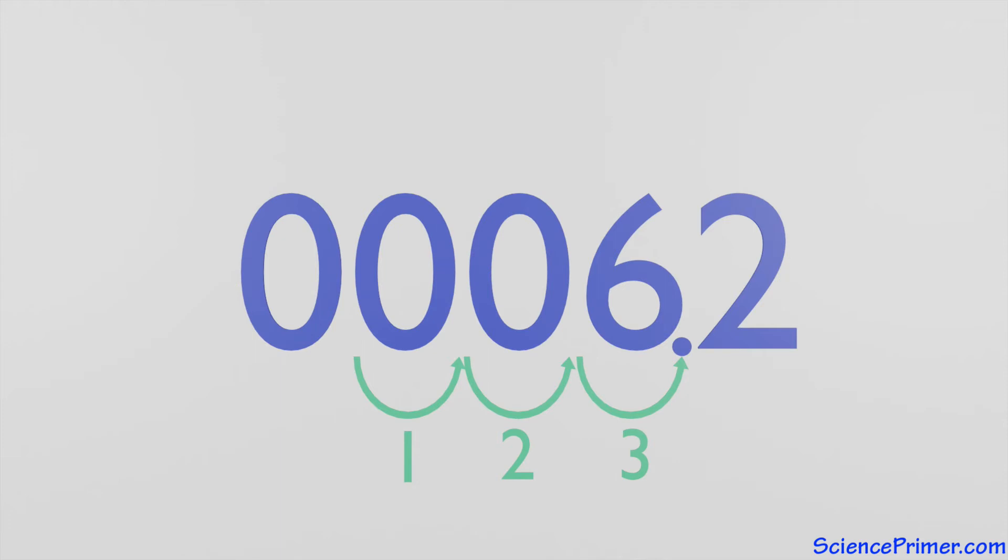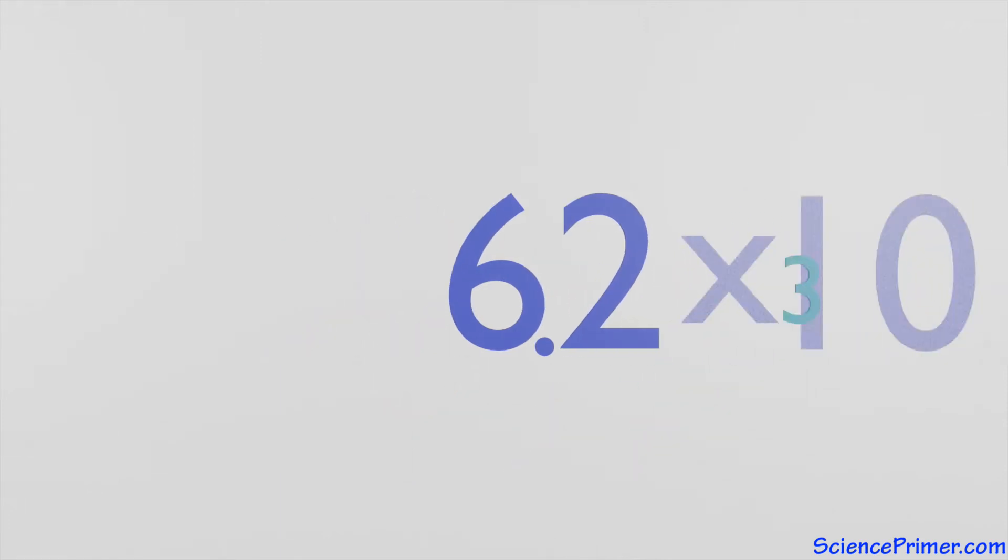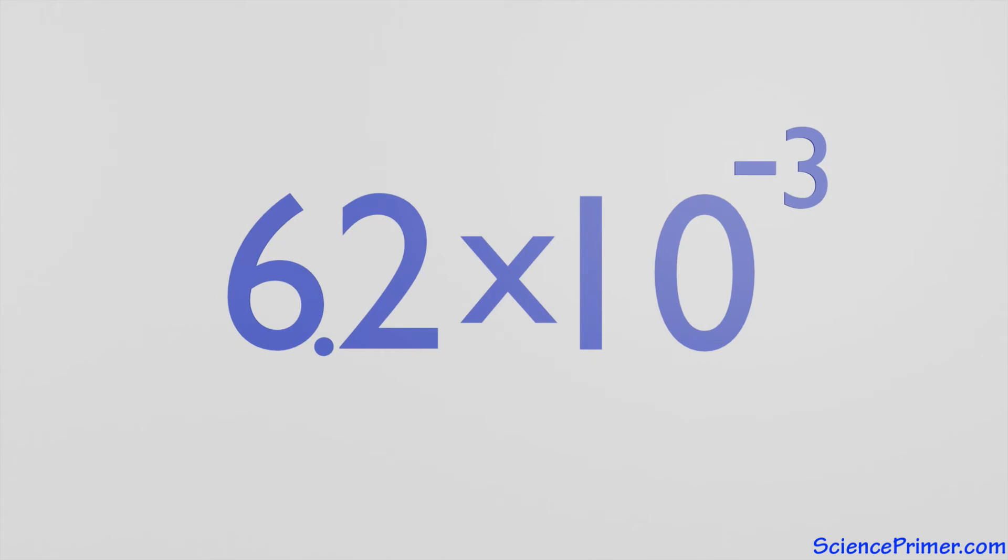As before, the number of places moved is used to write the rest of the expression, which is times 10 to the negative 3. The exponent is negative because the decimal moved to the right.